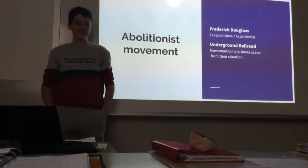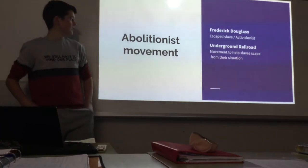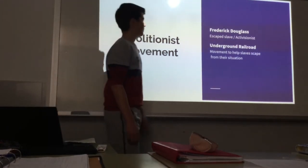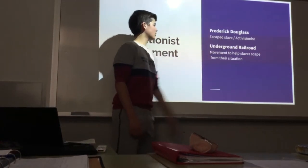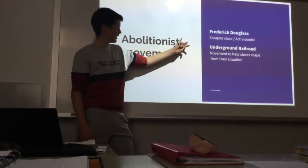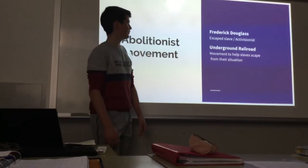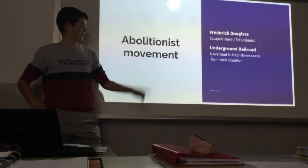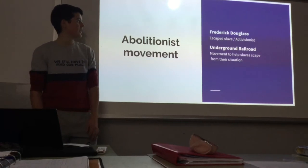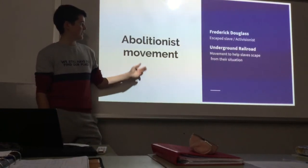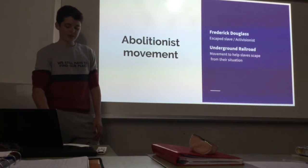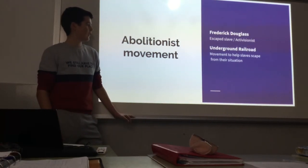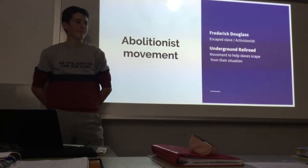In the 1860s the abolitionist movement was born and it wanted to abolish slavery. One of the most important activists was Frederick Douglass, who was an escaped slave and became an abolitionist. Some people from the northern states helped escaped slaves get out from the plantations via a network of safe houses that helped them to escape from slavery.